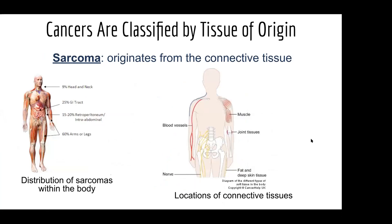The next type of cancer are called sarcomas. These are less common and they originate from connective tissue, which includes muscle, bones, tendons, and blood vessels — not the blood itself, but the actual vascular tissue. One you may have heard of is osteosarcoma, which is bone cancer.